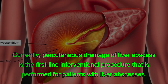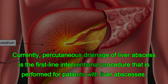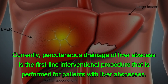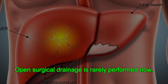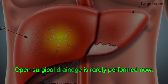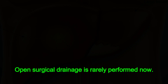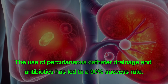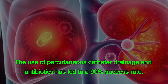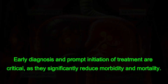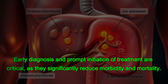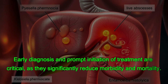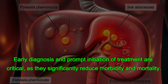Currently, percutaneous drainage of liver abscesses is the first-line interventional procedure performed for patients with liver abscesses. Open surgical drainage is rarely performed now. The use of percutaneous catheter drainage and antibiotics has led to a 90% success rate. Early diagnosis and prompt initiation of treatment are critical, as they significantly reduce morbidity and mortality.